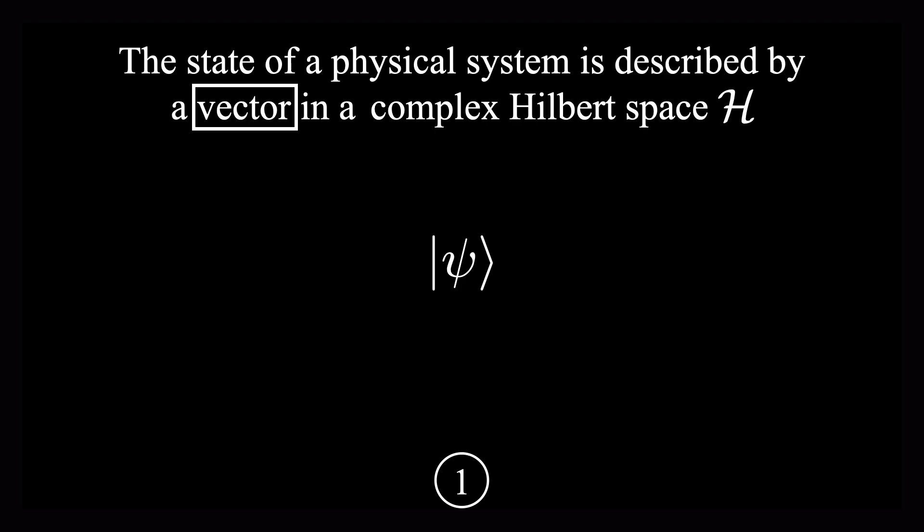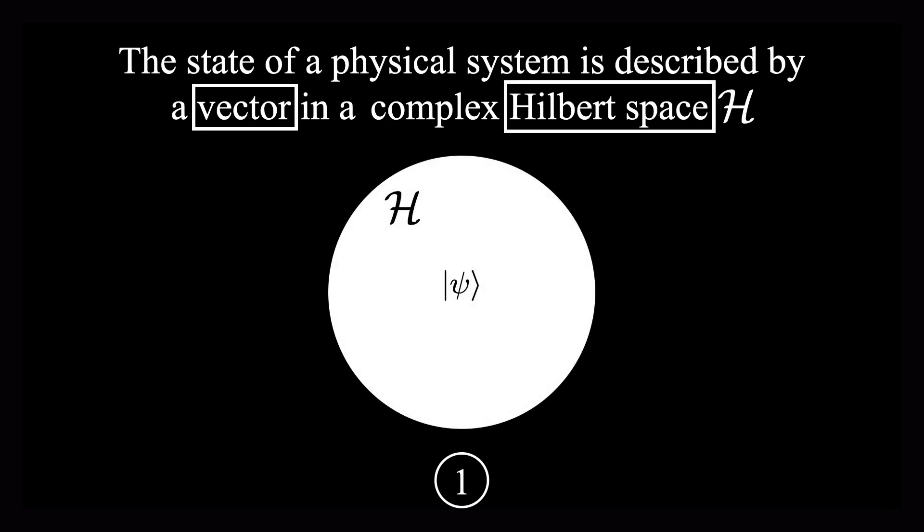In most quantum textbooks or papers you might read, these vectors will go by the name of Kets. That's just the standard, conventional terminology. Okay, so what is this Hilbert space that these vectors live in?